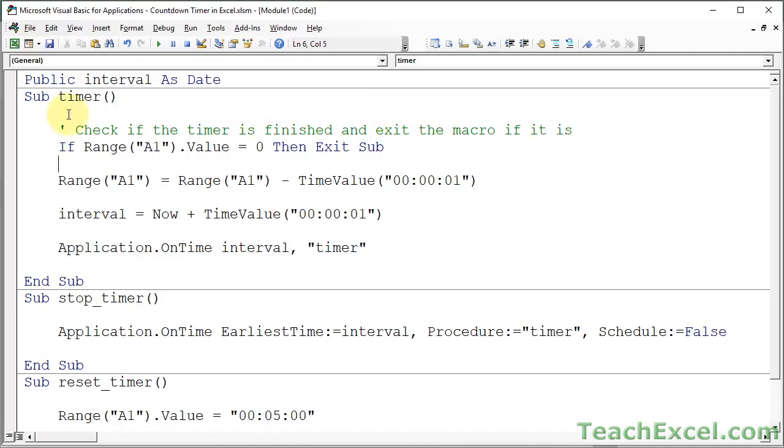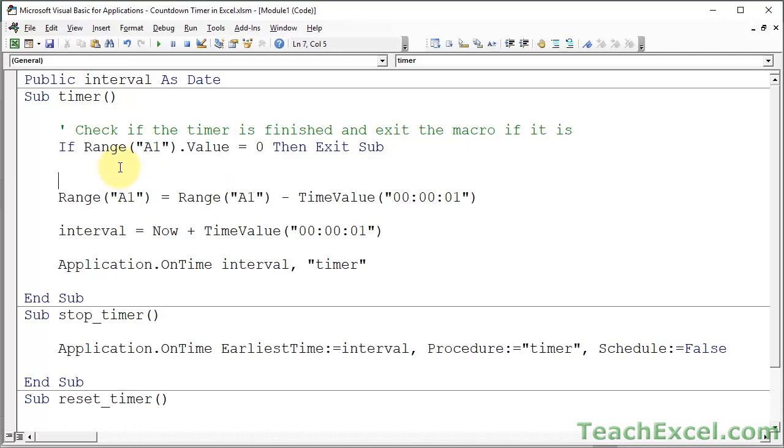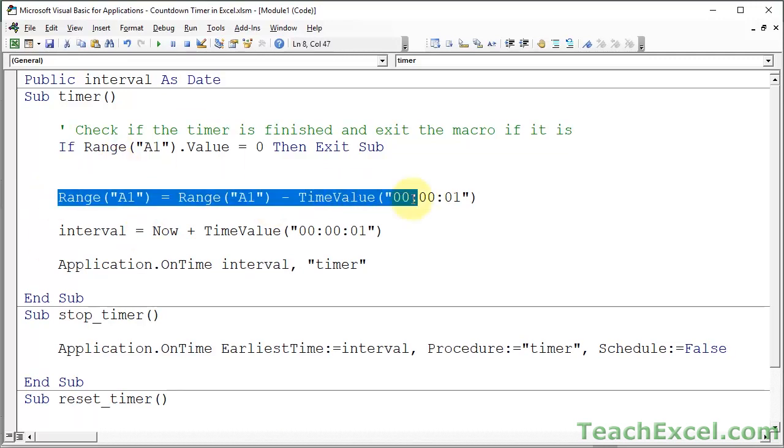Now, if we get to this point down here, if we get to anywhere below this line, that means that the timer didn't get to zero. So we have work to do. And this is the line where we do all the work. So this line right here is where we remove one second from the timer. Now,